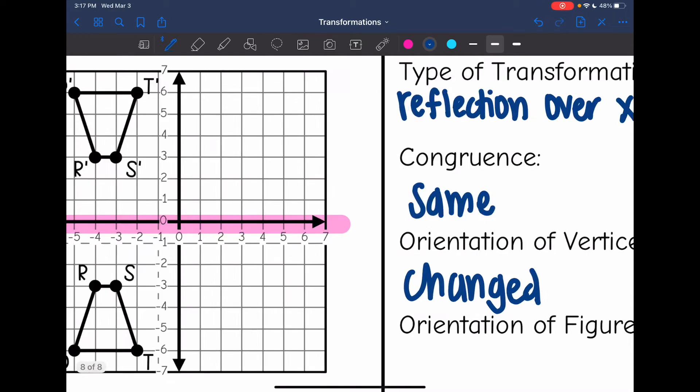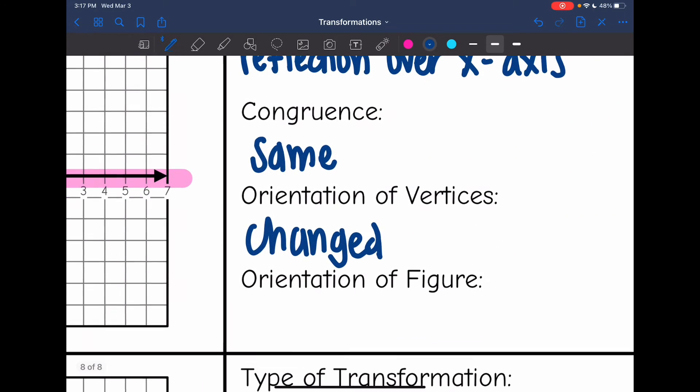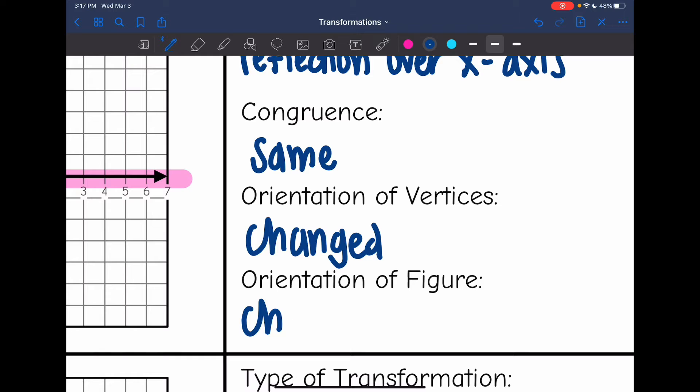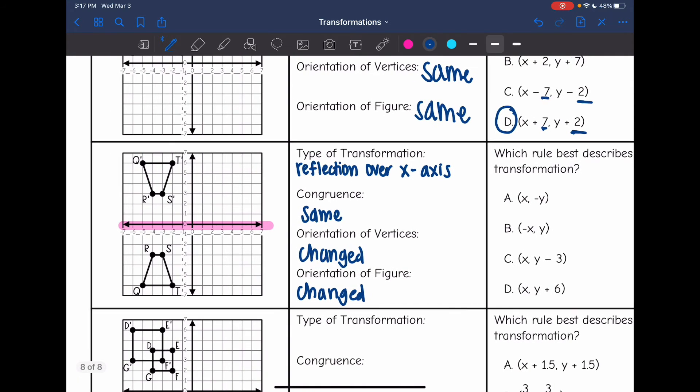And then the orientation of the figure, the way that it is facing, definitely changed as well. Okay, so now I need to identify the rule for the transformation. I'm going to go ahead and cross out C and D because those are translations. Translations are the only rules that have addition or subtraction.